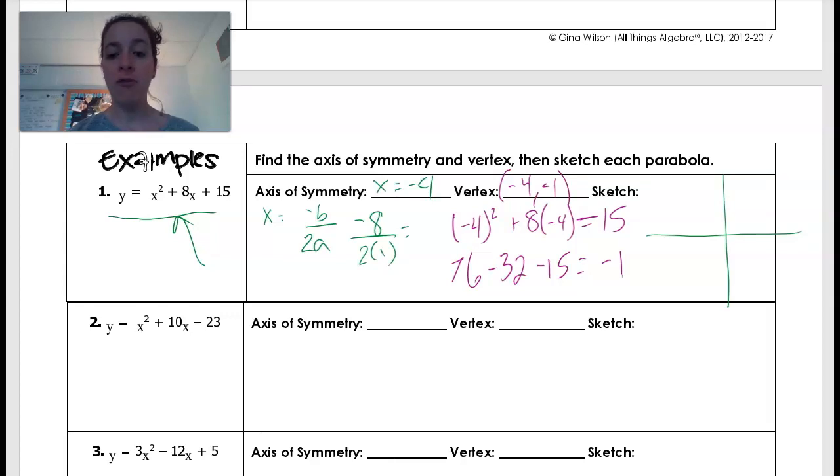So that point would be at negative 4, negative 1, which is right about there. And I know that my axis of symmetry goes through that point. So then I can kind of graph this curve. And I know that it's going to open up, seeing as my a value is positive. If that a value was negative, it would be opening down.